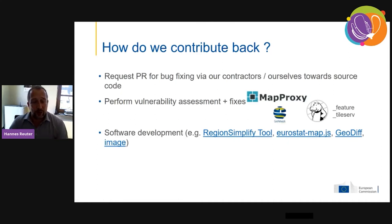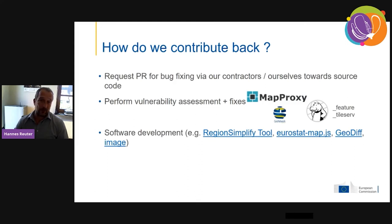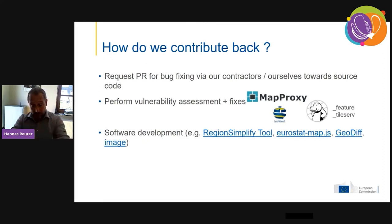How do we contribute back to the open source community? We usually contribute back when we identify issues — we ask our contractors to make pull requests towards the upstream source code. Sometimes they're accepted; sometimes they're not, and that's fine with us. We can try our best to be open and contribute, and whether it gets accepted is up to the maintainers.